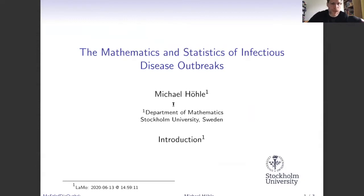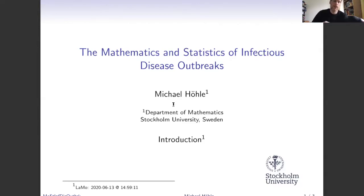My name is Michael Höhle. I have worked with infectious diseases for about 20 years. I have a background in mathematics and computer science, and after graduating I took a PhD in herd management, which was about trying to control infectious disease outbreaks in pig production. From then on I've worked mostly with statistical methods, and I also have experience working three years for the German Robert Koch Institute, which corresponds to the German version of the public health authority, from 2010 to 2013.